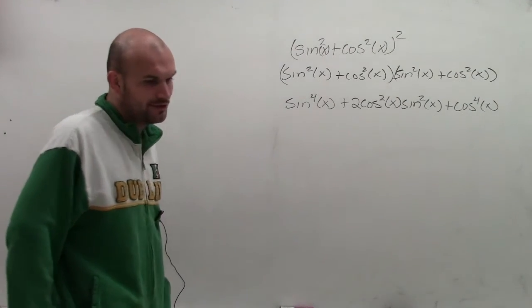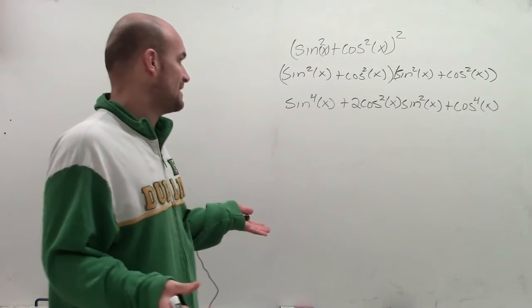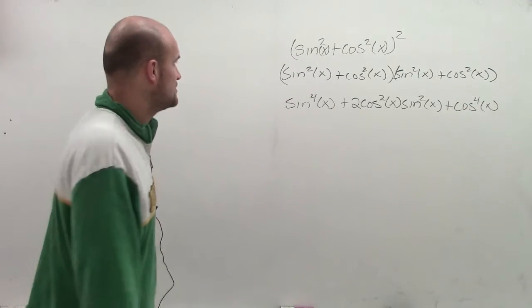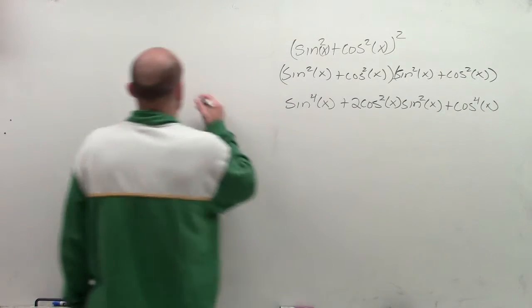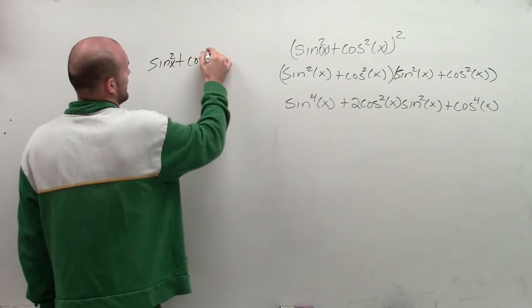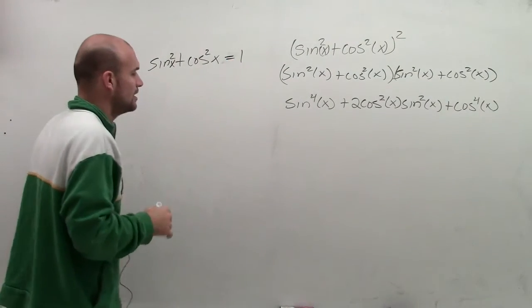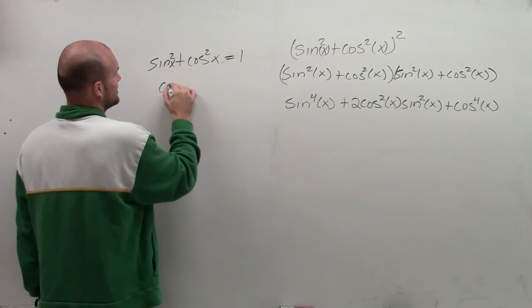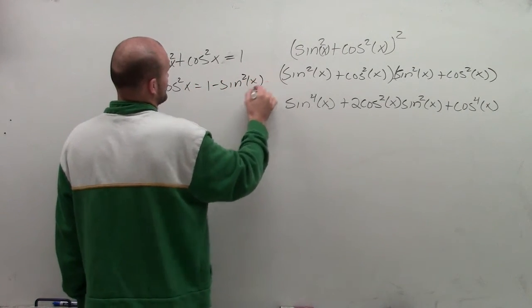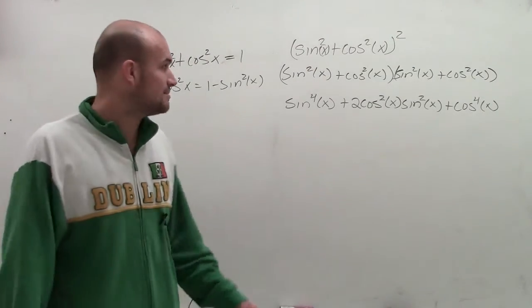So one thing that we can always work into as far as simplifying this is seeing how, first of all, I can't combine any further. But let's see if we can rewrite this in terms of either sines or cosines. So let's go back to our Pythagorean identities. And we can see that sine squared plus cosine squared equals 1. So therefore, we can simply solve for cosine squared of x equals 1 minus sine squared of x. So what I'm going to do is I'm going to try to rewrite everything in terms of cosine.